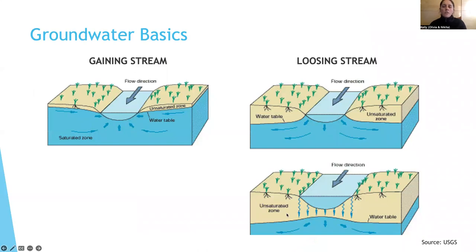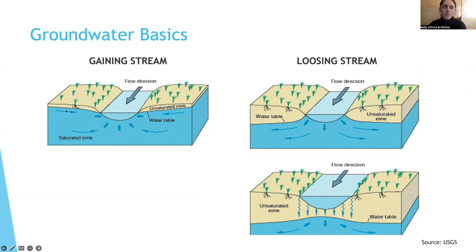Whether a stream gains or loses in-stream flow from groundwater depends on the location of the water table. The water table is the top of the saturated zone, with an unsaturated zone above it. If the water table is higher than the stream, water from the groundwater can flow into the stream — that's called a gaining stream. If the water table is lower, the stream can actually feed the groundwater — that's called a losing stream.